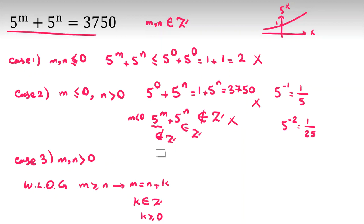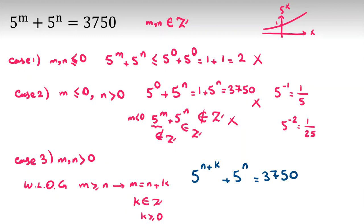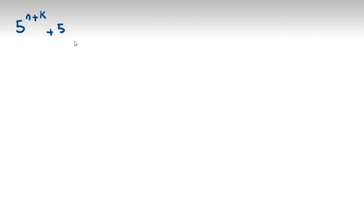Let's focus on the substitution. We replace m with n plus k, so the equation becomes 5^(n+k) plus 5^n equals 3750.